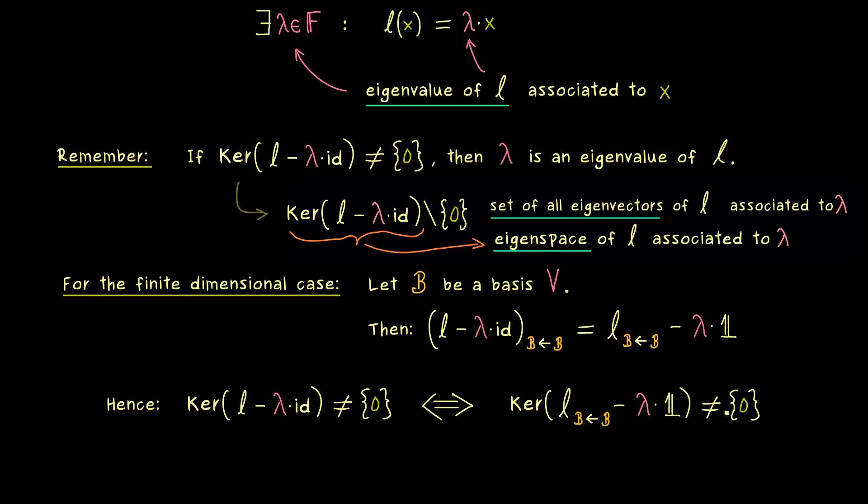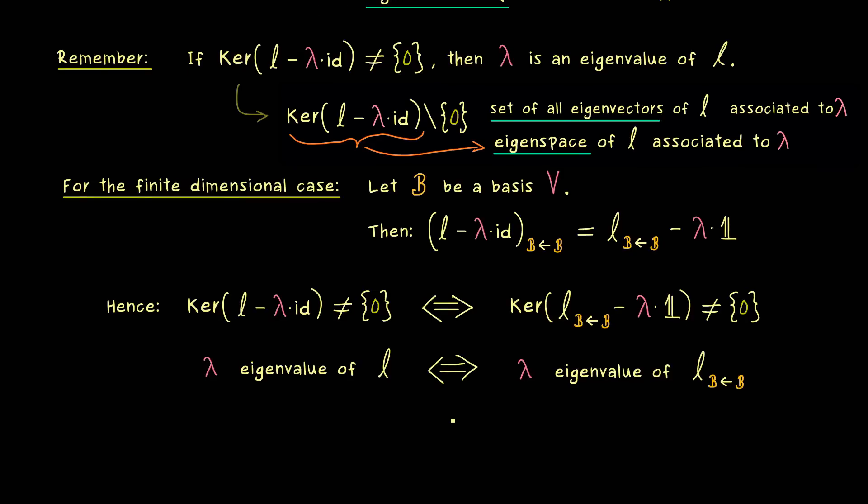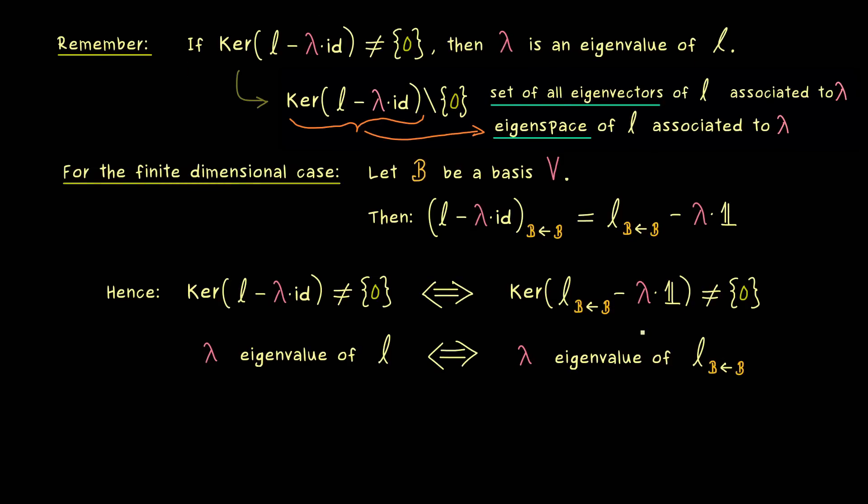However, here on the right hand side we know that this is the description of eigenvalues for matrices. This means if we go to the matrix representation we don't change the eigenvalues at all. This is important to remember because we already know how to calculate eigenvalues for matrices. We just have to solve the corresponding characteristic polynomial which is given by a determinant.